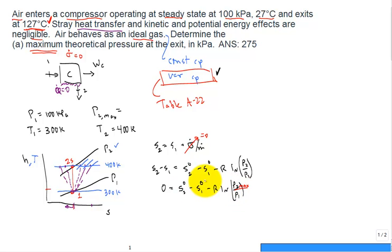And we're given our two temperatures, so we can evaluate the S naught at two, that only depends on T2, and the S naught at one only depends at T1. And we're given the inlet pressure, so we just solved this equation, assuming the change in S equal to zero, for P2.